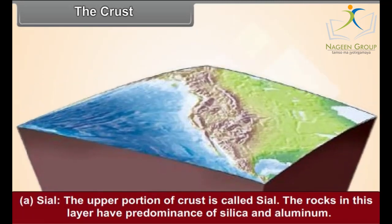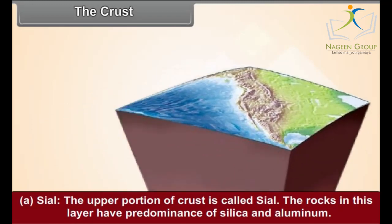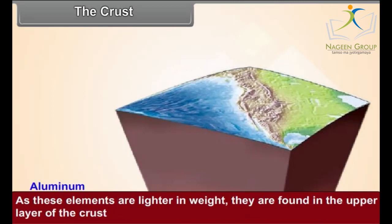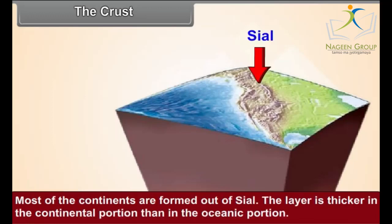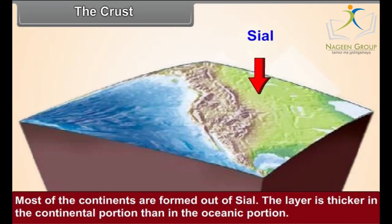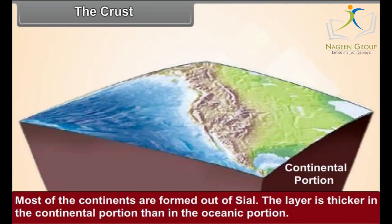The upper portion of the crust is called SIAL. The rocks in this layer have a predominance of silica and aluminum. As these elements are lighter in weight, they are found in the upper layer of the crust. Most of the continents are formed out of SIAL. The layer is thicker in the continental portion than in the oceanic portion.